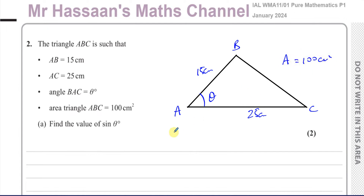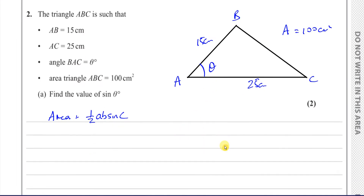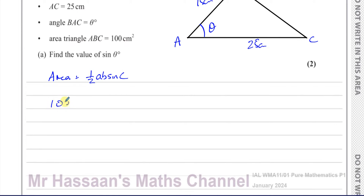We can use our formula for the area of a triangle when we don't have the vertical height, which is: Area = ½ × a × b × sin(C), where a and b are the two sides and the angle is between those two sides. When you have two sides and the angle between them, a half times the product of those two sides times the sine of the angle between them gives you the area. So we can say: 100 = ½ × 15 × 25 × sin(θ).